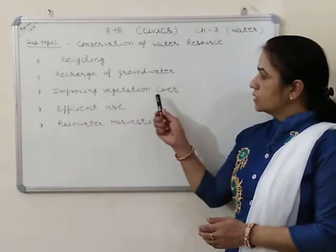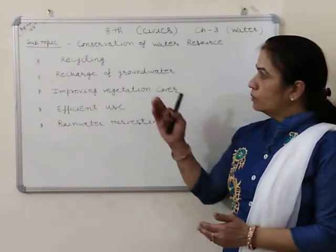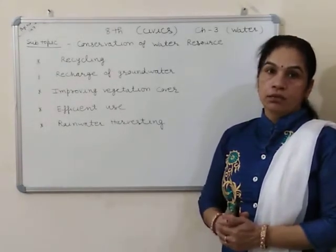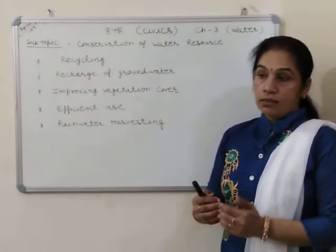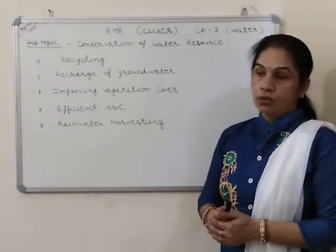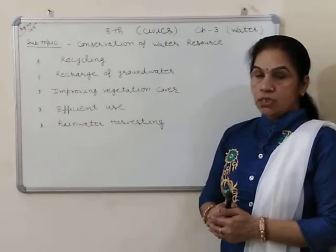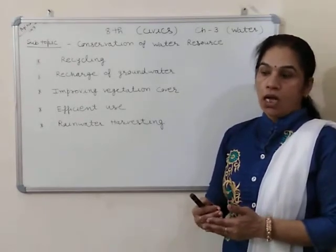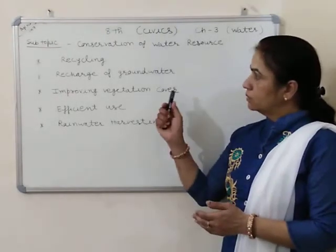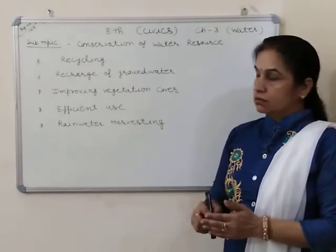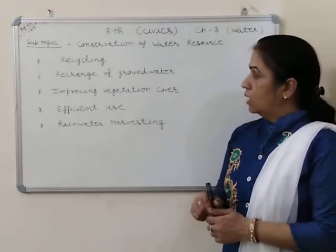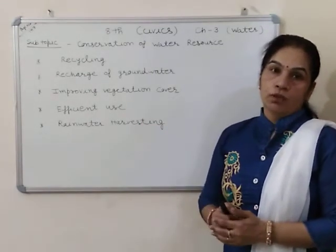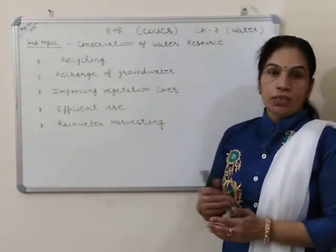Next is improving vegetation cover. We can increase the groundwater table by improving vegetation cover. The roots of plants bind the soil, and water percolates under the ground through the soil. If vegetation is increased, the capacity of soil to soak water increases, which ultimately raises the groundwater level. But if the ground is bare, there will be less possibility of recharging the groundwater. So we have to increase vegetation cover.